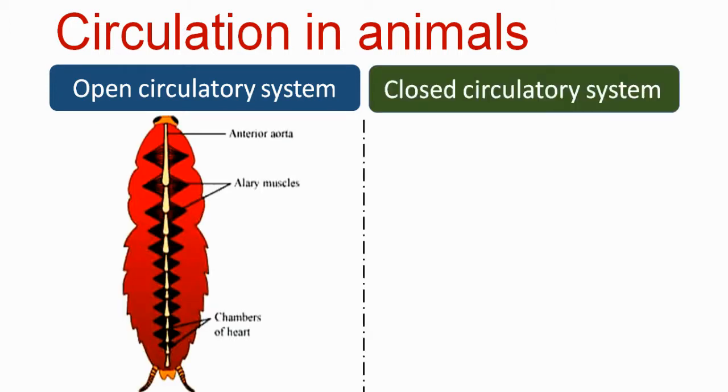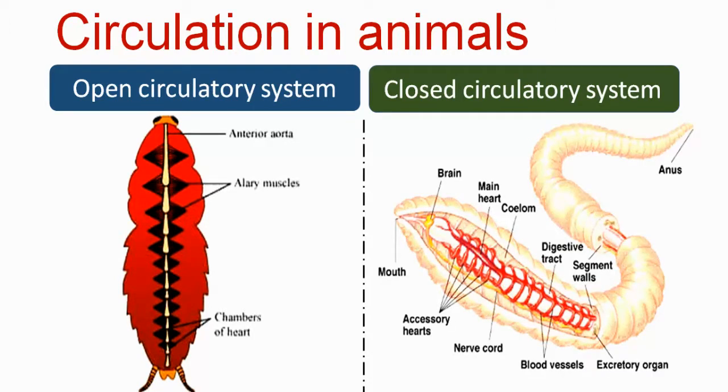If you have a blood carrier system, then you have a blood vascular system. This blood vascular system is of different types in higher invertebrate animals and all vertebrate animals. The circulatory system is of two different types: open type of blood vascular system and closed type of blood vascular system.